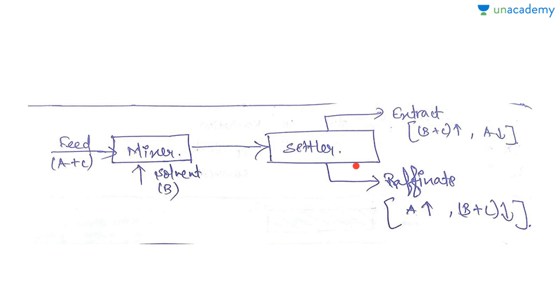In the settler, two phases are created: one is the extract phase and the other is the raffinate phase. In the extract phase, solvent plus solute will be rich - meaning the extract phase will be rich in solvent and solute, whereas the carrier liquid will be less in quantity. In the raffinate phase, A (the carrier) will be more, and B plus C (solvent plus solute) will be less. Extract phase is always rich in solute, whereas raffinate phase is always rich in carrier liquid.